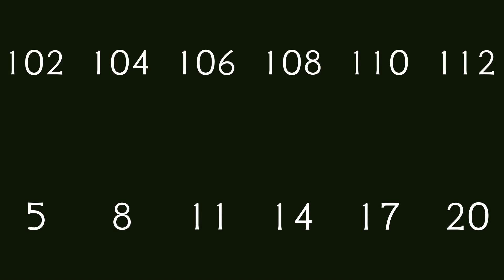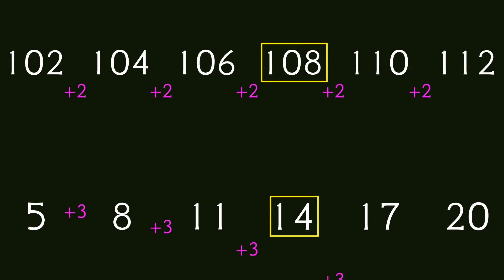Now let me hit you with a harder one. Compare this sequence where the numbers are again increasing by 2, to this sequence where the numbers are again increasing by 3. This time if I asked which sequence has a bigger fourth element the answer is obviously the first sequence. However if I ask about the 50th element the answer is much less obvious, because while the second sequence starts much lower it is also increasing faster.